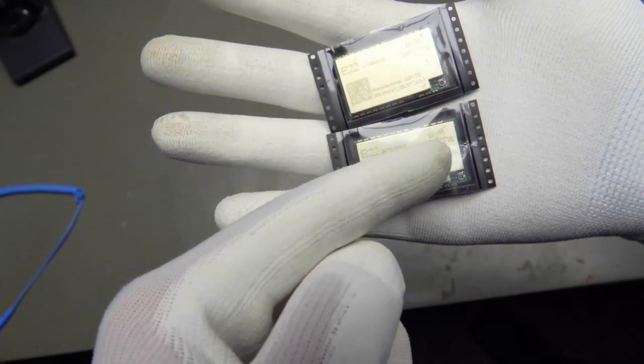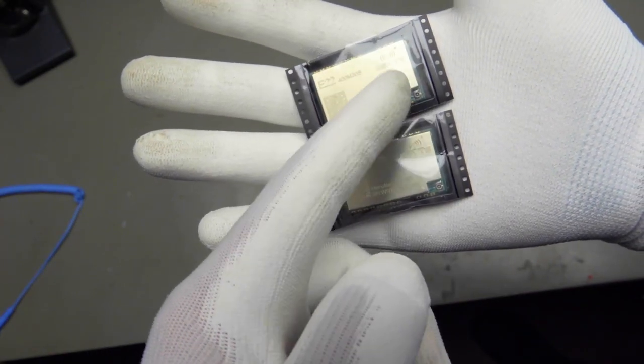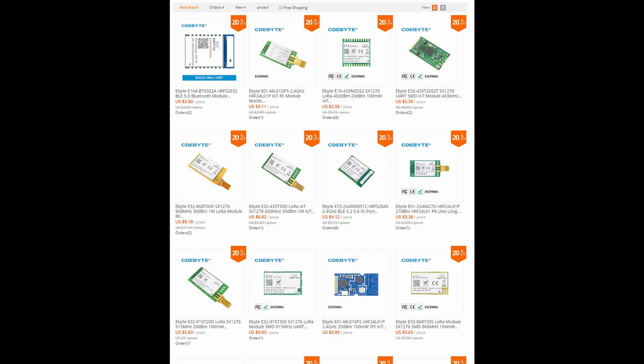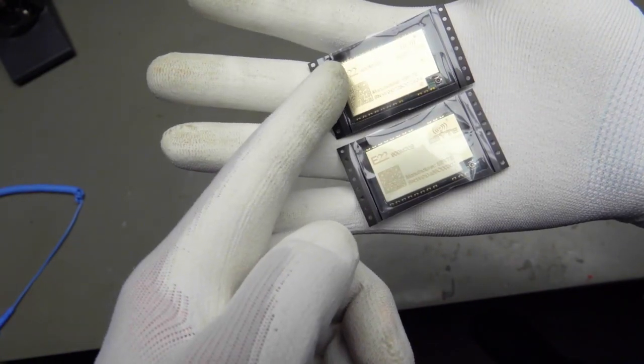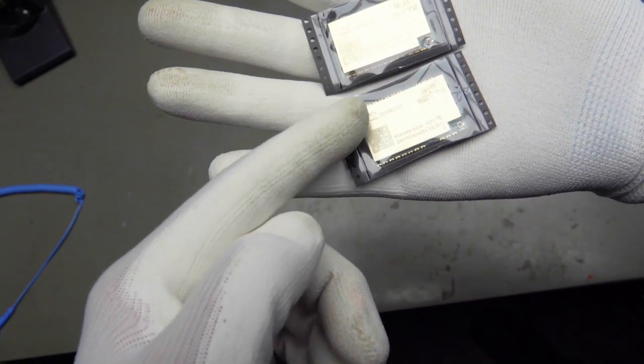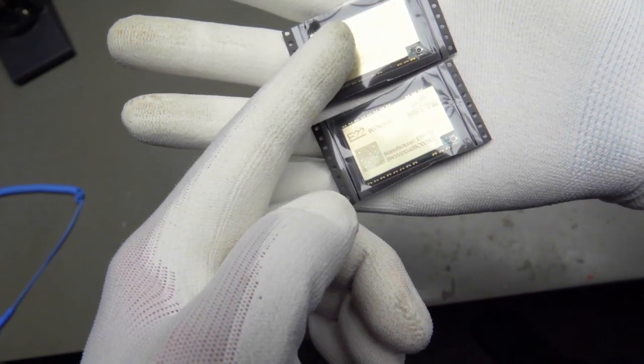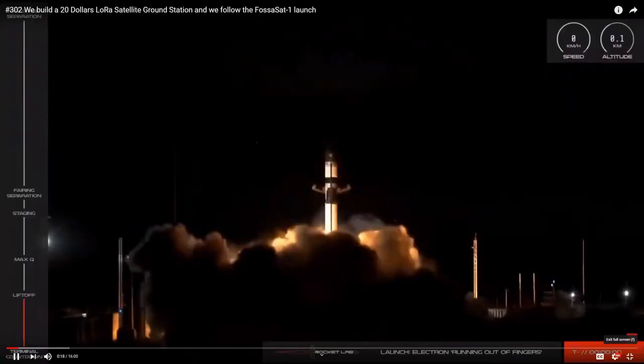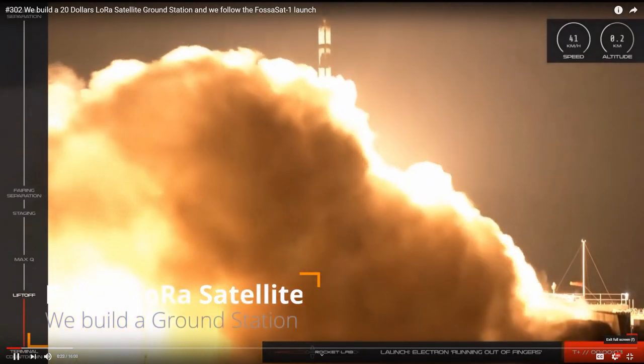The next two are LoRa modules with the new SX1262 chips from eByte. This eByte is a very good manufacturer. They have a wide range of different modules and they look like quite high quality. So this one is the E22 and this one is the 400M and this one is the 900M. This works on 868, 915 and this on 433. I bought this one.